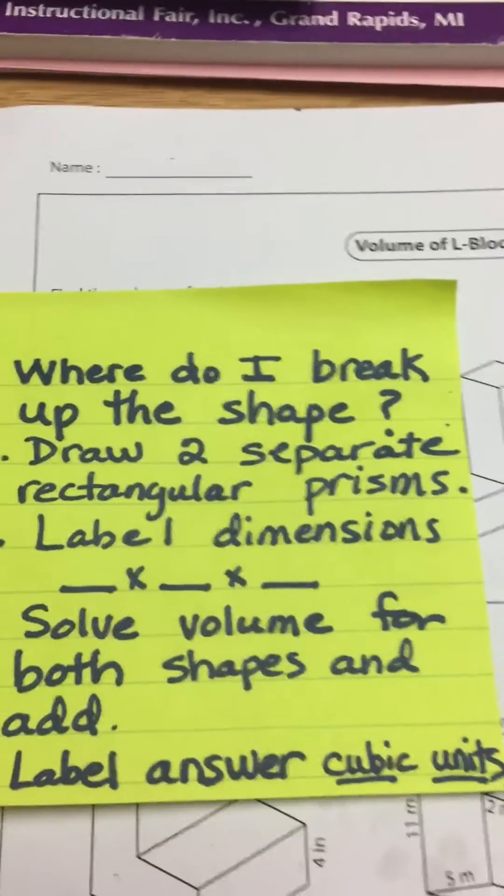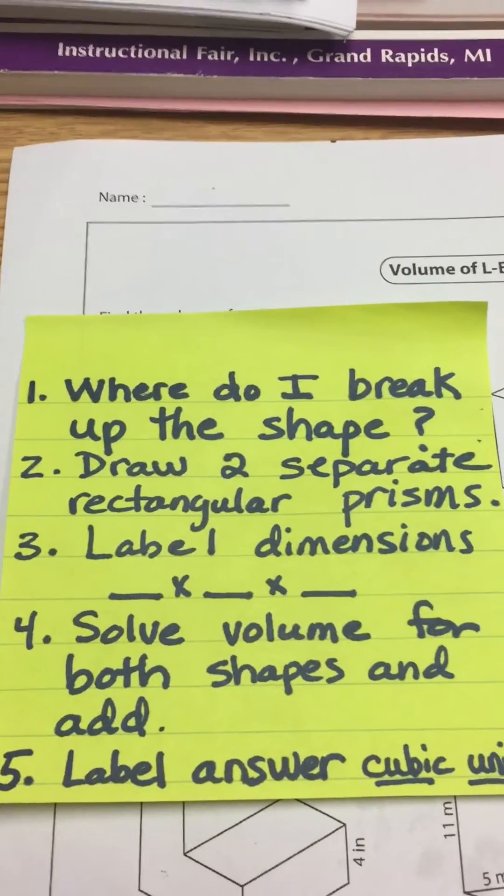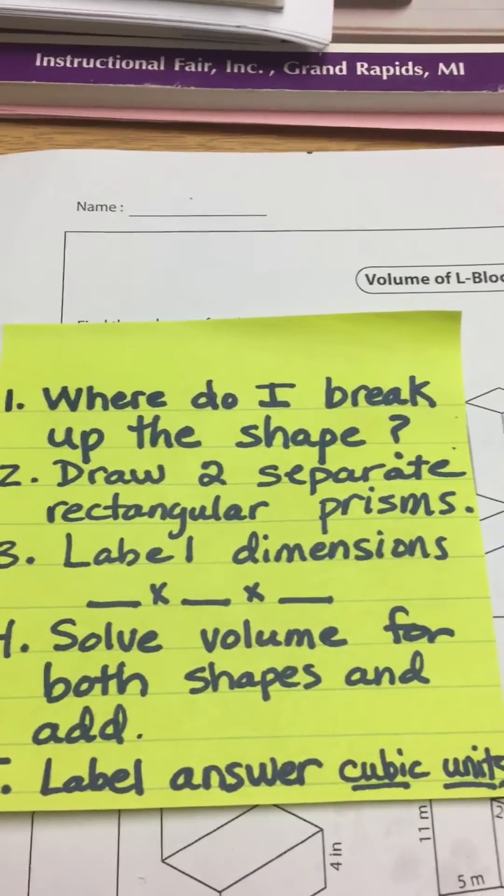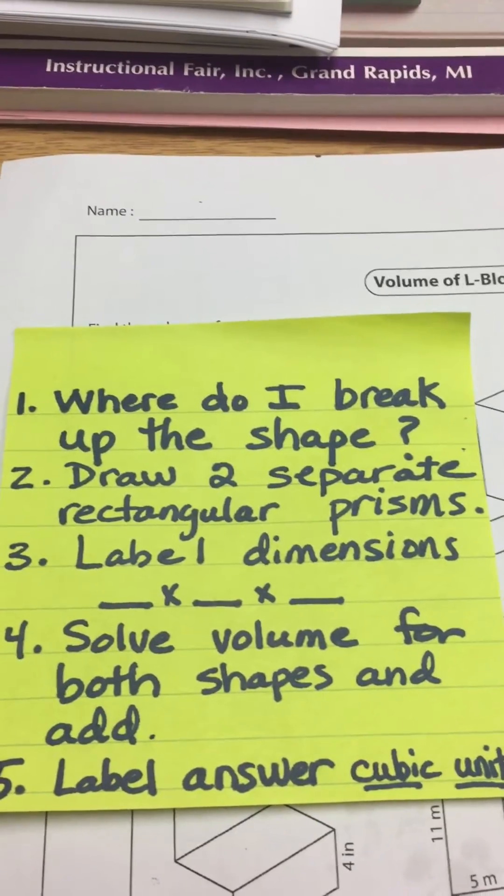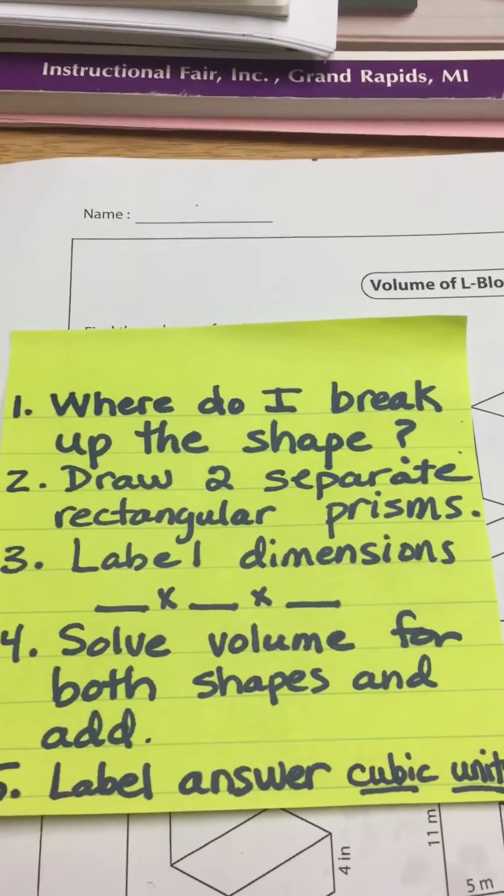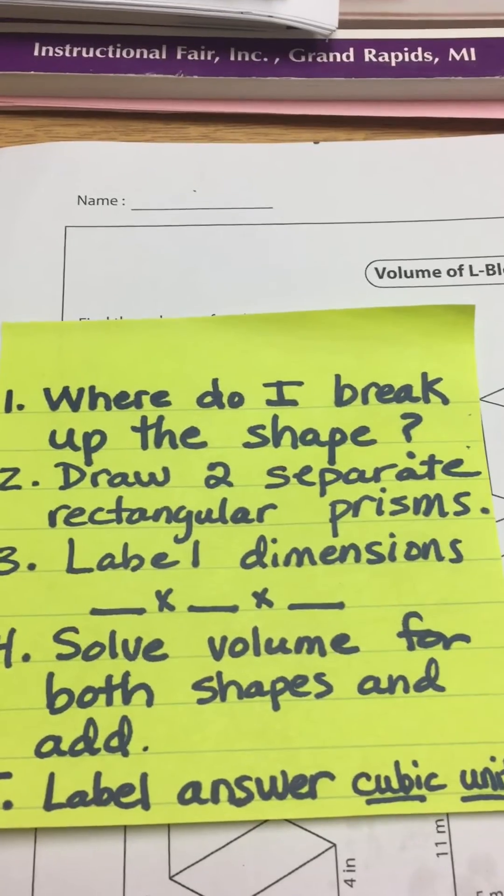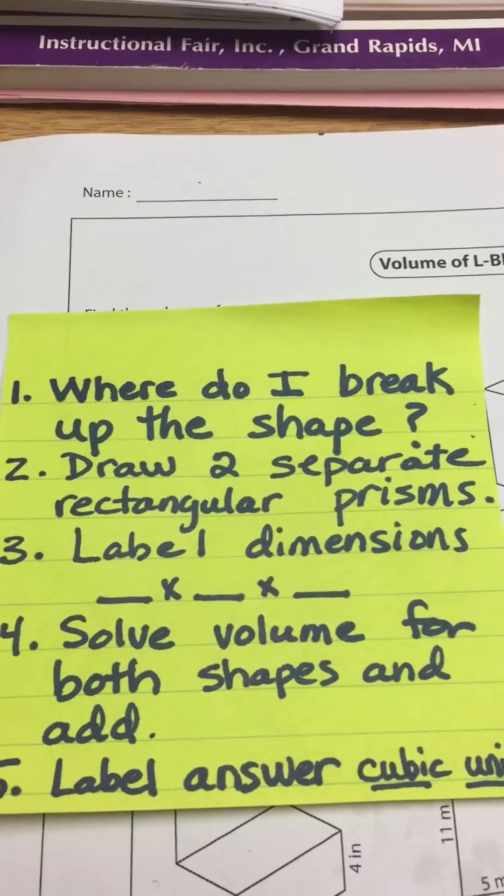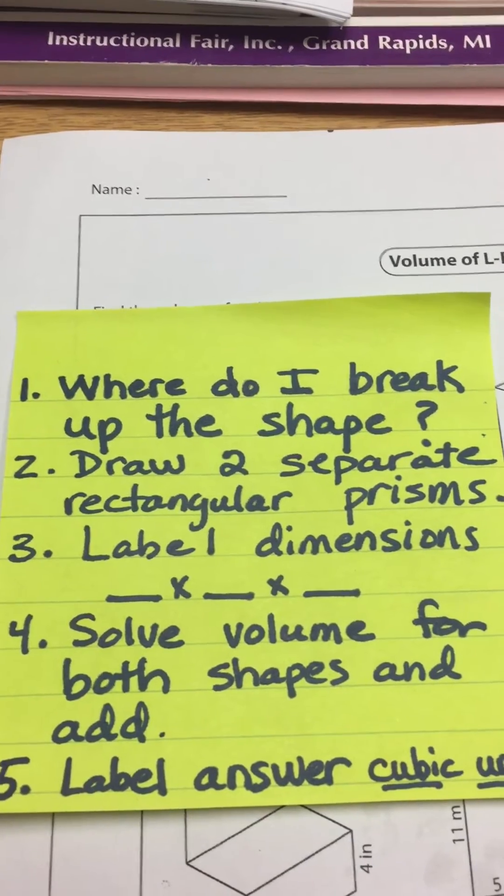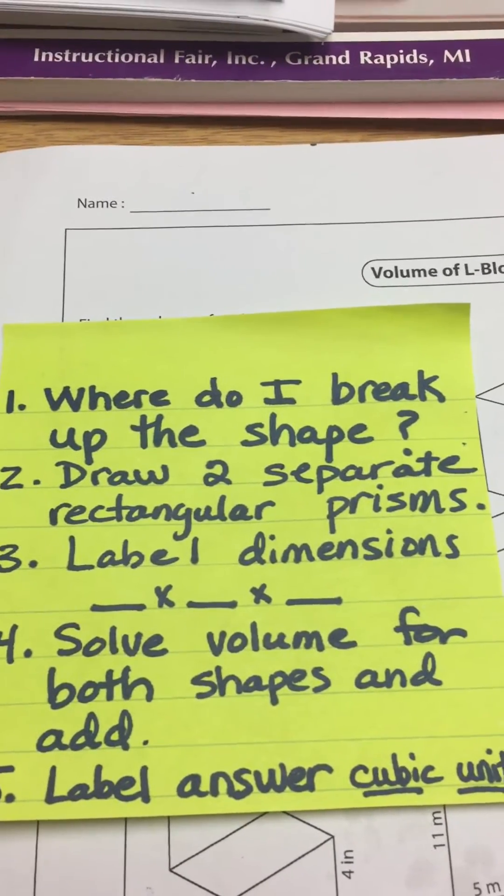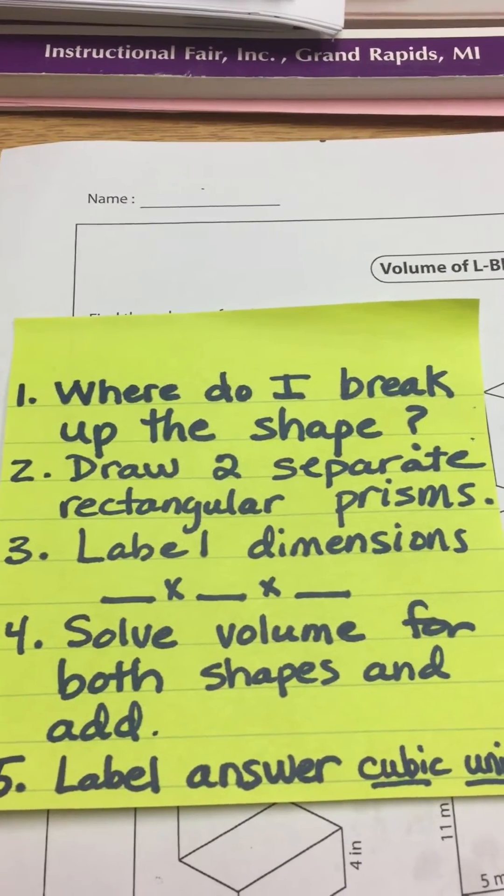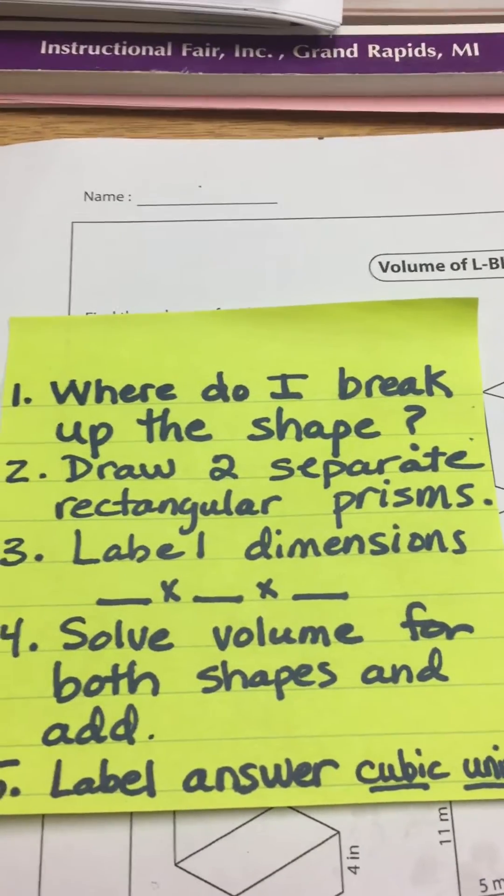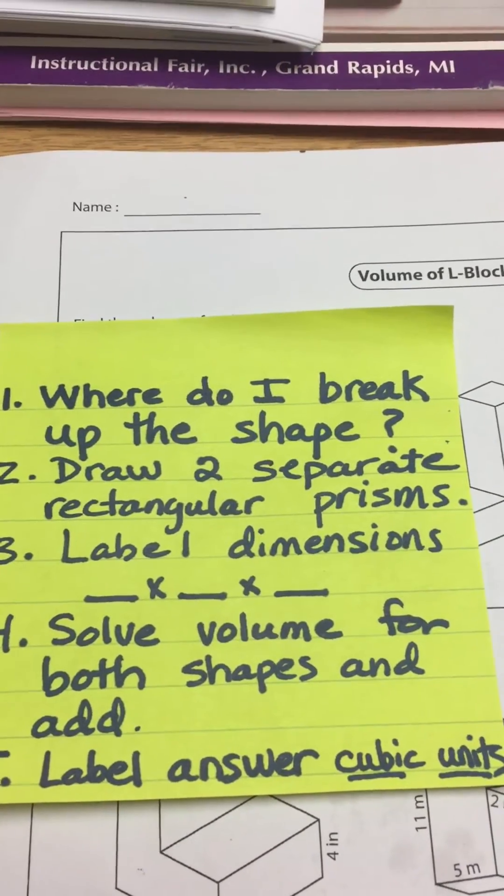We always ask ourselves, where do I break up the shape? That's the first thing we do. Then we draw two separate rectangular prisms to represent the one. We label all of our dimensions for each of the separate shapes and then we solve the volume for both shapes and we add. Don't forget to label your answer with cubic units.